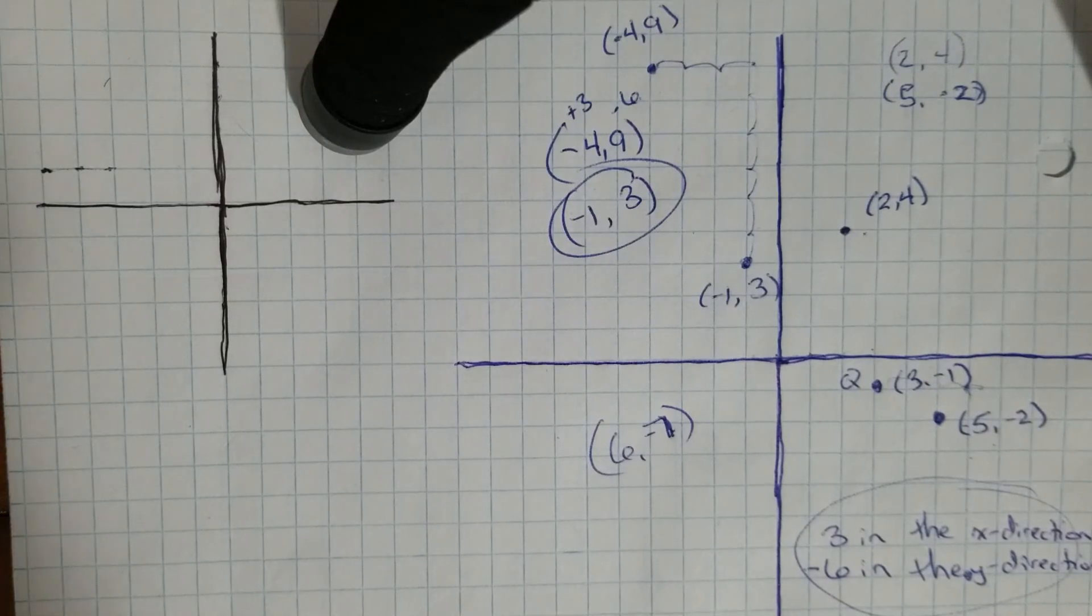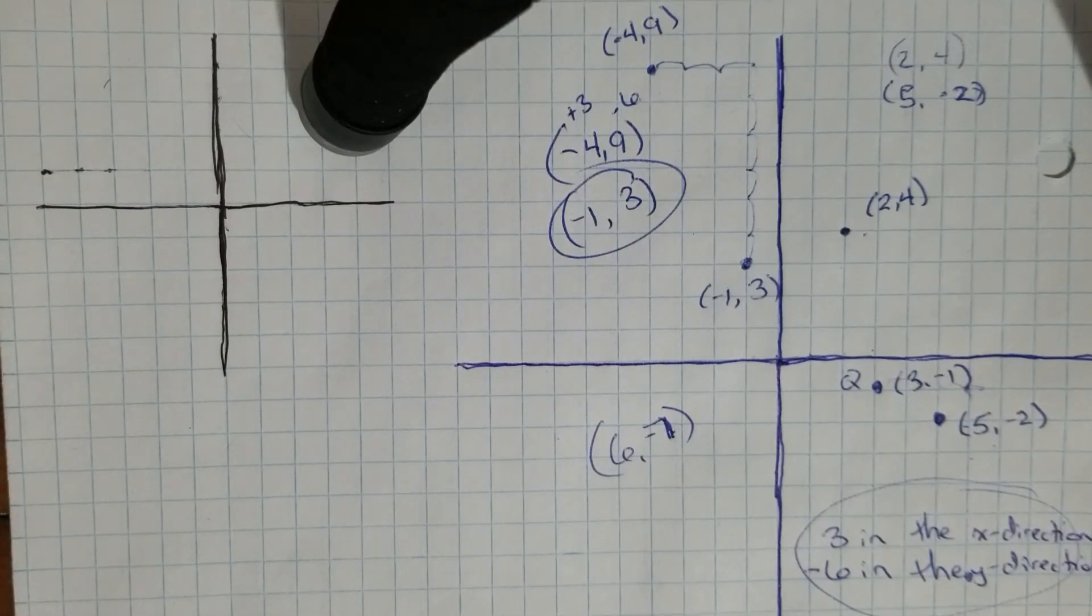For that particular point when you translate Q using that same translation of three in the X direction, negative six in the Y direction. Hopefully that helps explain Try It 4 as you're going through your questions and for those of you who might have been a little bit stuck on that. Have a great day, Grade 8.